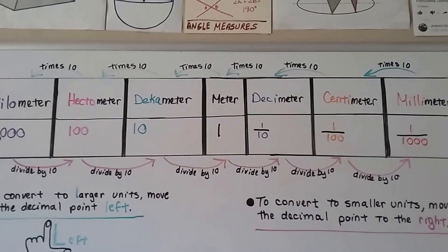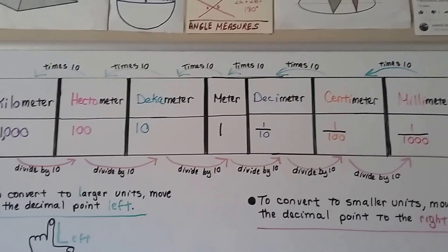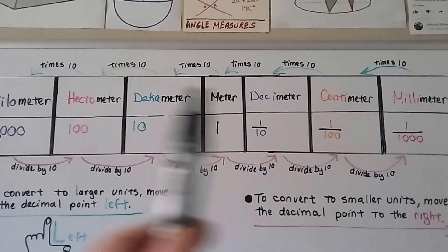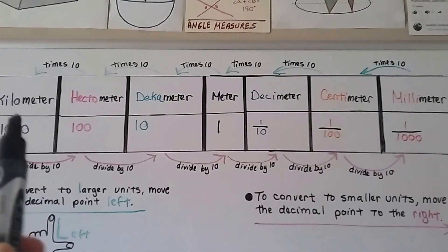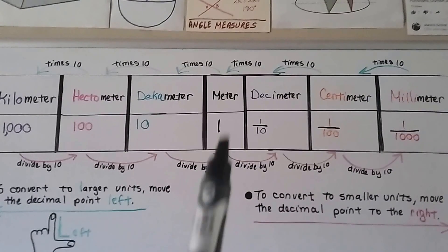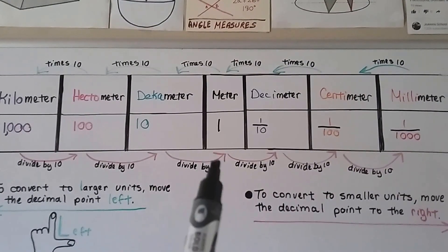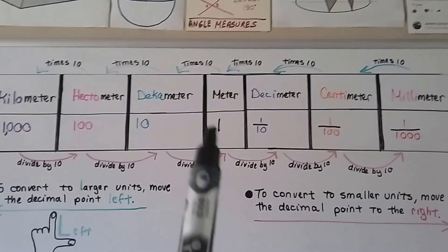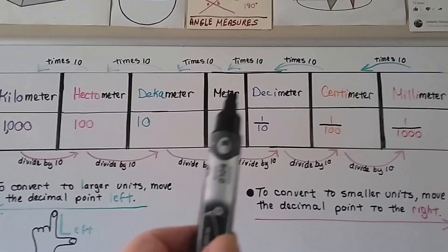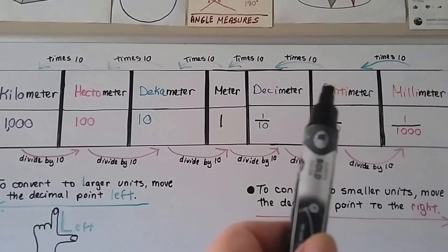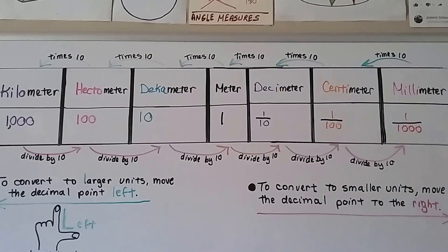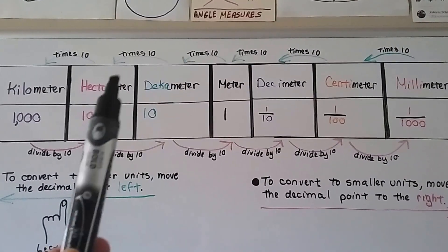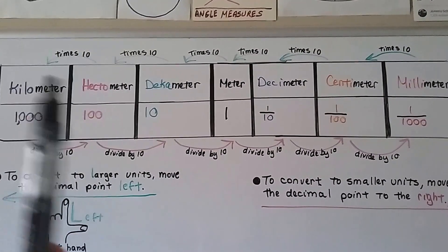The most important thing to remember is the order of these names. The meter is in the middle — that's what everything is based off of. When we go smaller, we go decimeter, centimeter, millimeter. When we go larger, we go decameter, hectometer, kilometer.